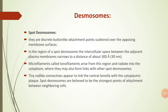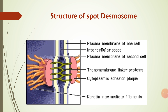The next specialization is desmosomes. Desmosomes are cell junctions found mainly in cells of simple columnar epithelium. They occur as specialized areas along the contact surface — discrete, button-like attachment points scattered over the opposing membrane surfaces. In the region of a spot desmosome, the intracellular space between adjacent plasma membranes narrows to a distance of about 300 Ångströms, and microfilaments called tonofilaments arise from this region and radiate into the cytoplasm.